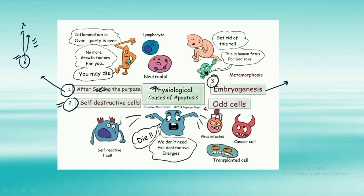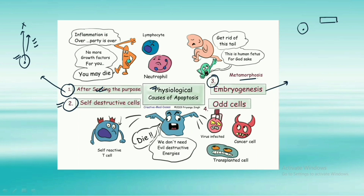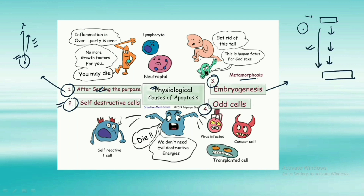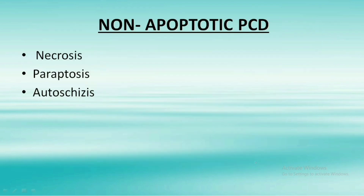Metamorphosis is when a young individual of a species undergoes various developmental stages and physiological changes in order to become an adult — that complete process is given the name metamorphosis. The fourth physiological cause involves odd cells — those that are either infectious, cancerous, or transplanted. These cells can also undergo apoptosis.